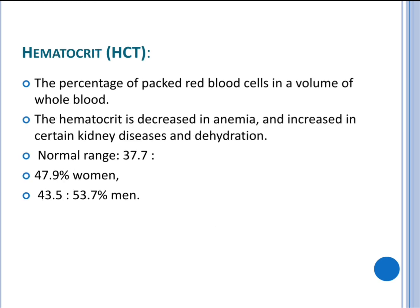Hematocrit is the percentage of packed red blood cells in a volume of whole blood. Hematocrit is decreased in anemia and increased in certain kidney diseases and dehydration. The normal range of hematocrit is 37.7 to 47.9 percent in women and 43.5 to 53.7 percent in men.